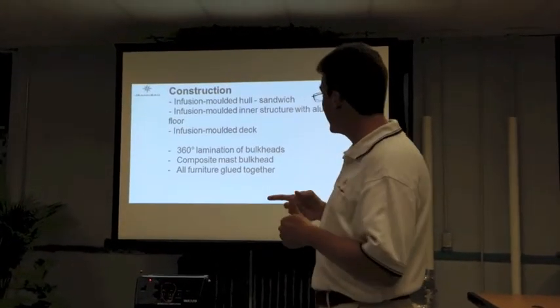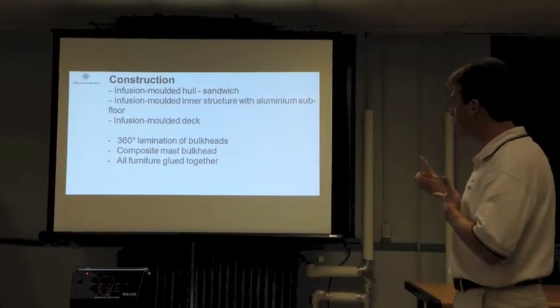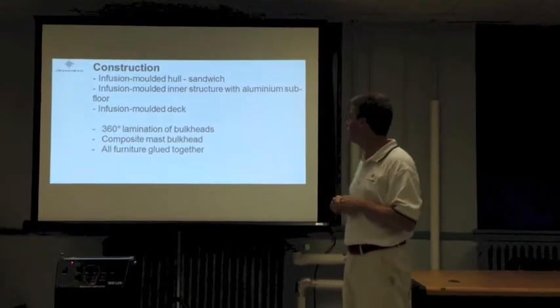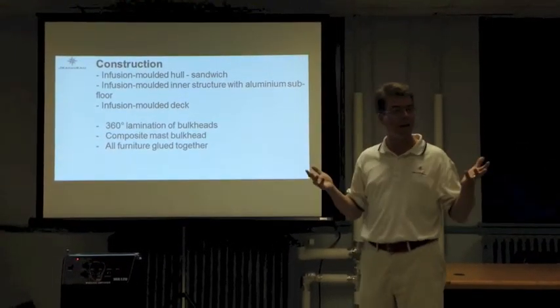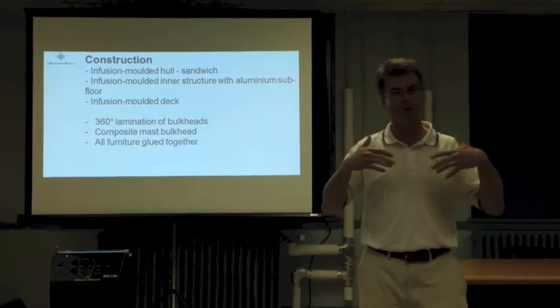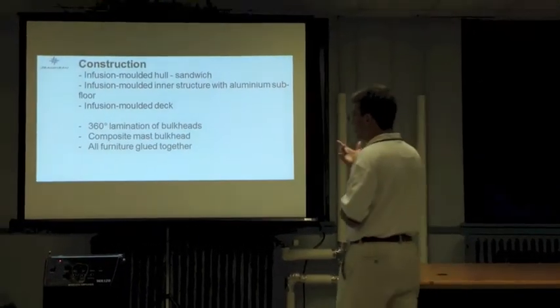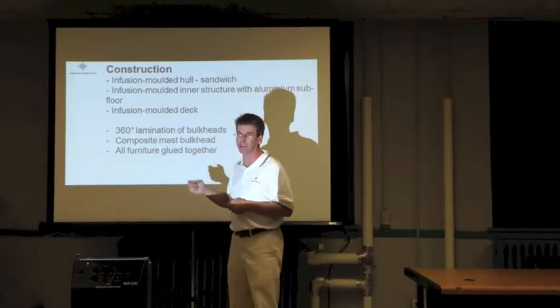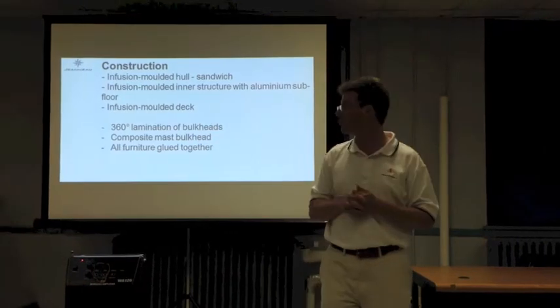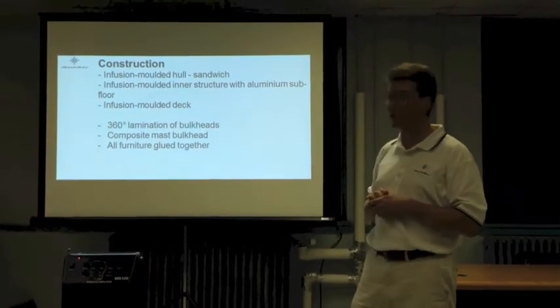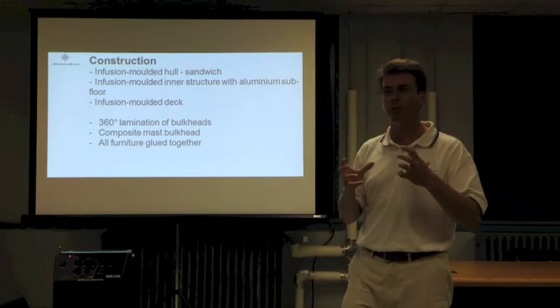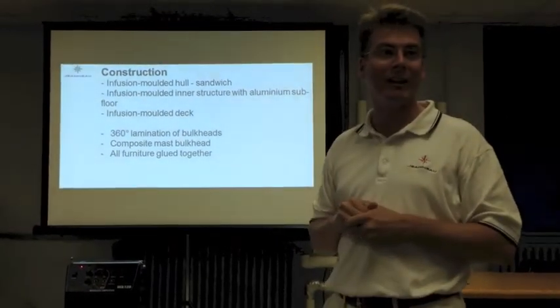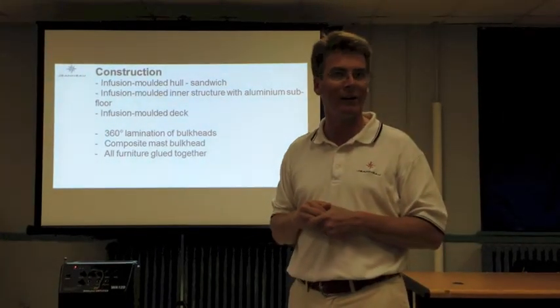On the construction side, infusion-molded hull, sandwich construction. Infusion-molded inner structure with the aluminum subfloor like we have on a 57. We do an infusion-molded deck. No deck liner, which means you have to dress the entire deck, which gives the boat a very high-end feel. It's 360-degree lamination of all the bulkheads. Composite mast bulkhead, which is three inches thick, a big structure. All the furniture is all glued together. As the boat moves, you don't hear anything in the movement. A very high-end building technique. That's what the market demands at that size range.